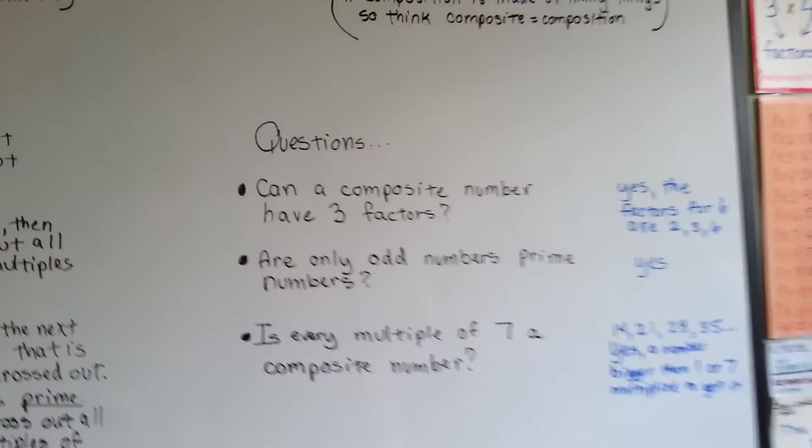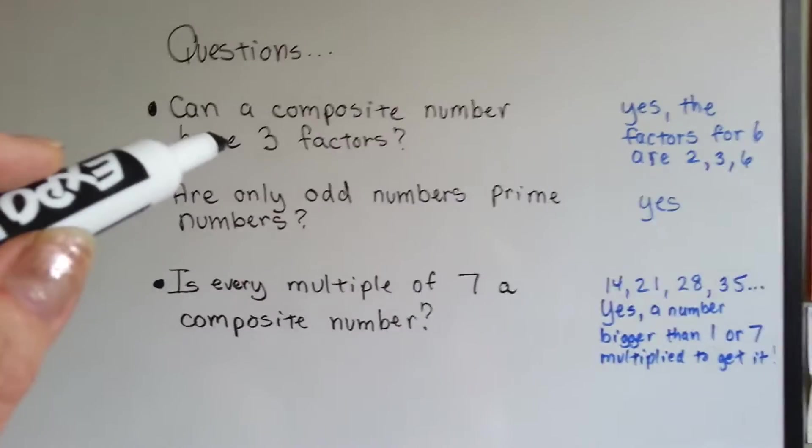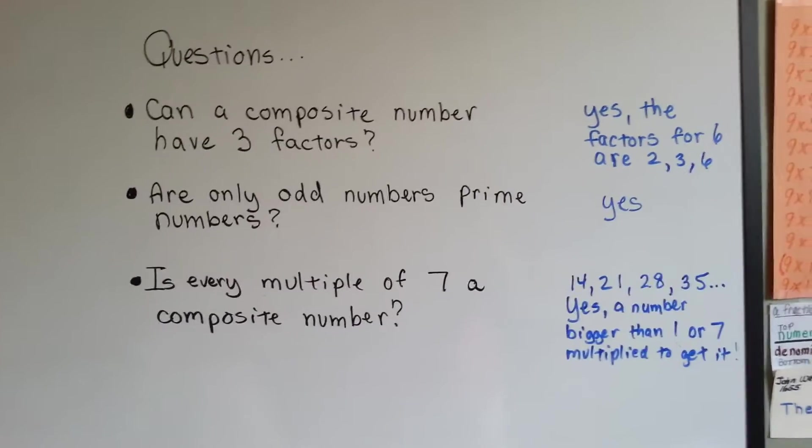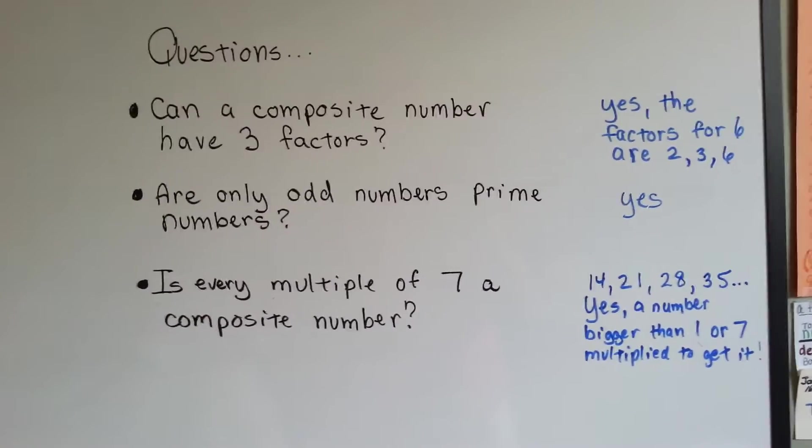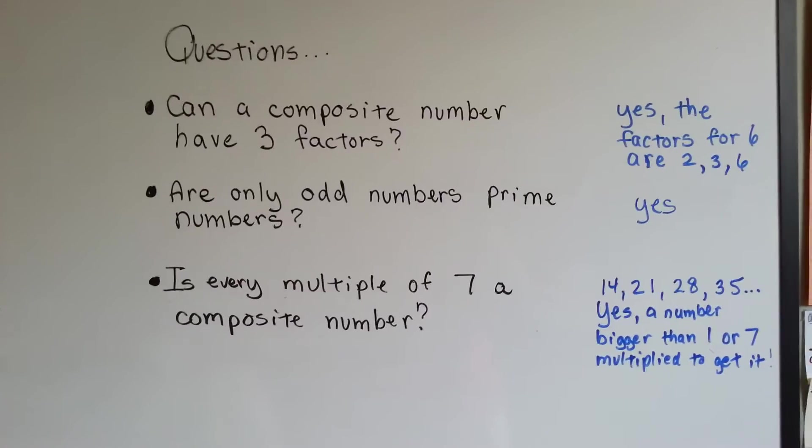Let's ask ourselves some questions. Can a composite number have three factors? Yes, the factors for 6 are 2, 3, and 6. 2 times 3 is 6, 3 times 2 is 6, and 6 is a factor of itself.